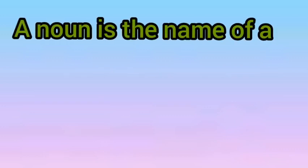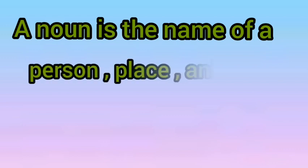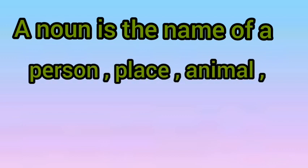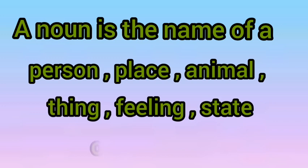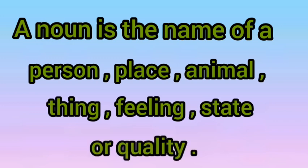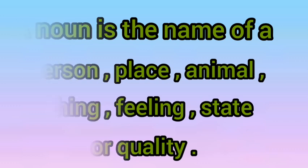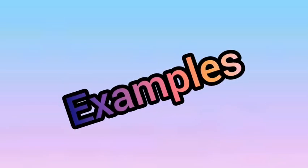A noun is the name of a person, place, animal, thing, feeling, state or quality. In simple words, we can say that a name of any person like Amitabh Bachchan, Narendra Modi, Sachin Tendulkar, or any thing name like book, copy, any animal name like cat, dog — these things are known as a noun. Let us understand noun more clearly with the help of few examples.